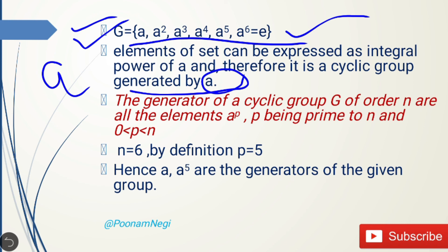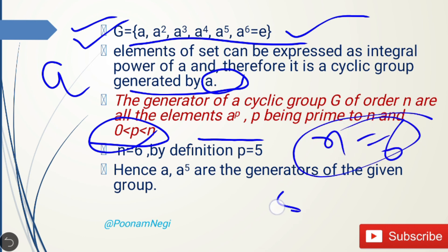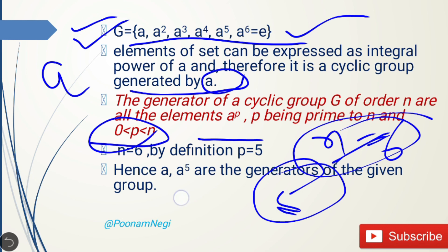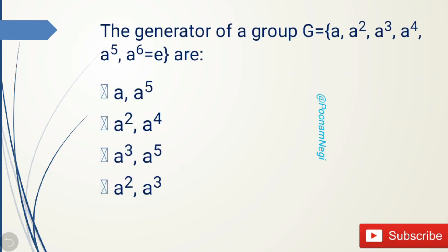We have already seen that there may be more than one generator for any group. The theorem states: the generators of a cyclic group G of order n are all elements aᵖ where p is relatively prime to n and 0 < p < n. For n = 6, since 5 is relatively prime to 6, a⁵ is also a generator. Therefore this group has two generators: a and a⁵.